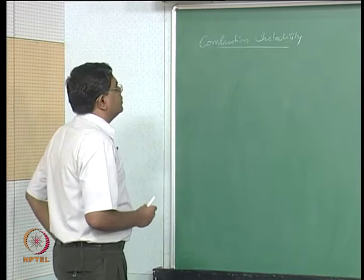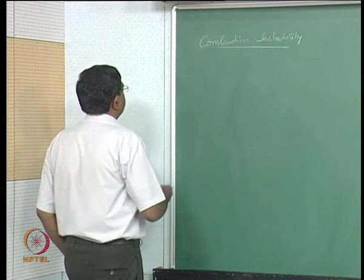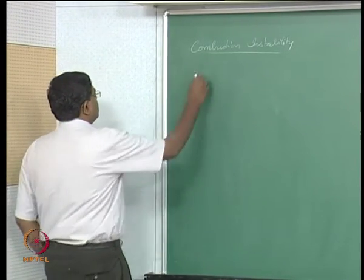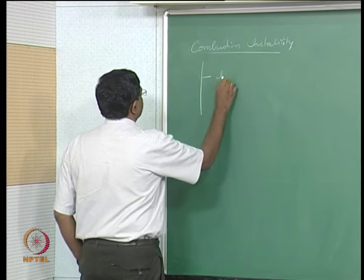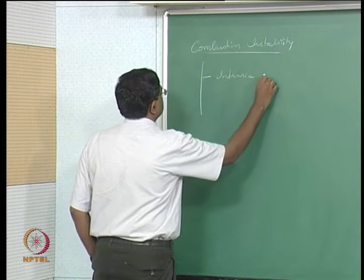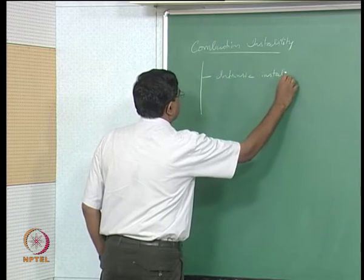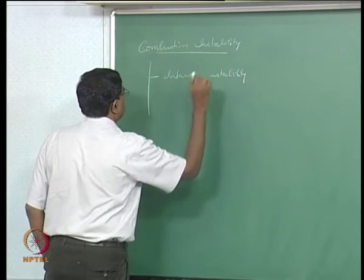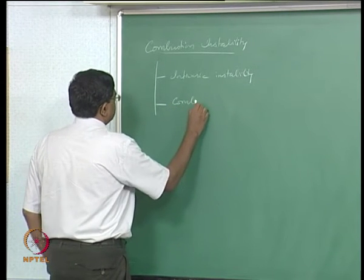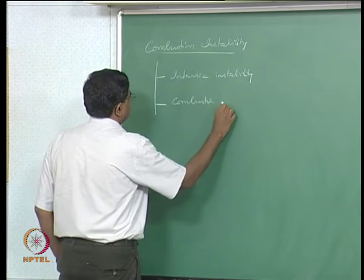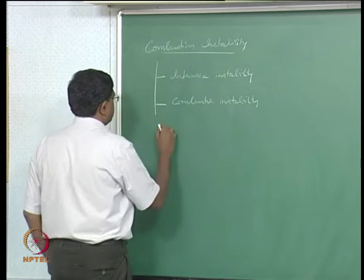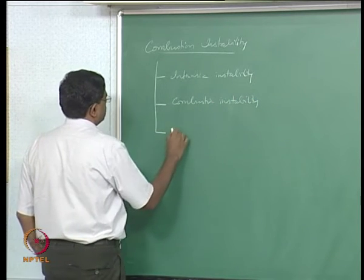Early on, Williams identified that there are three aspects to combustion instability: the first is intrinsic instability, the second is combustor instability, and the third is system instability.